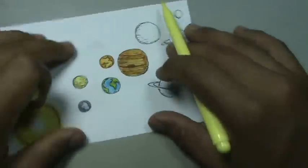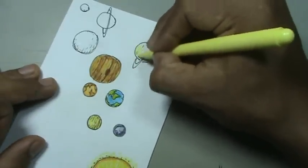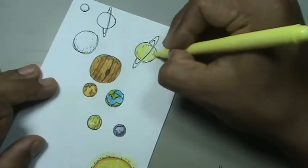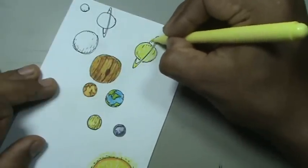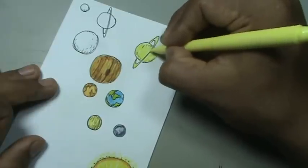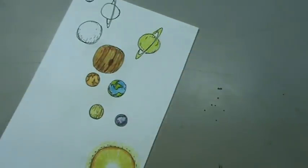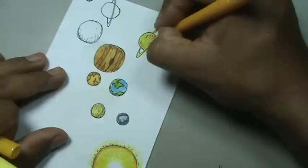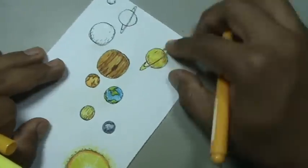Vamos a pintar a Saturno. Y vamos a hacer aquí un color amarillo primero. Con un color un poco más oscuro trazamos las líneas del planeta. Ahí lo tenemos.